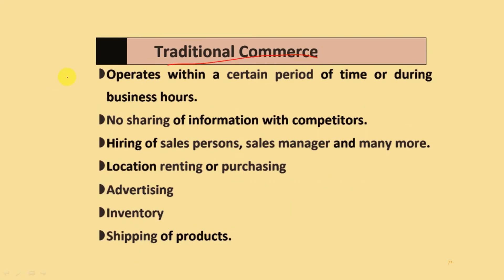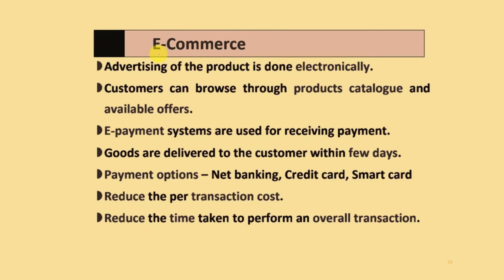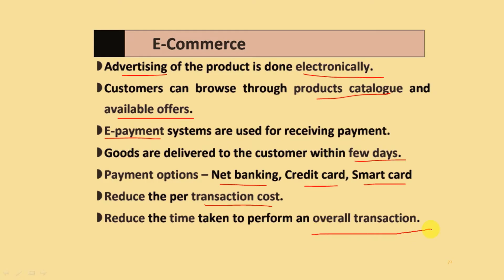In traditional commerce, business operates within certain hours, there is no sharing of information with competitors, and it requires hiring sales persons, sales managers, and others, along with costs for location, rent or purchase, advertisements, inventory, and shipping. In e-commerce, advertising is done electronically, customers can browse product catalogues and available offers, e-payment systems are used to receive payments, and goods are delivered within a few days. Payment options include net banking, credit cards, smart cards, and other mechanisms. E-commerce reduces per-transaction cost and time.